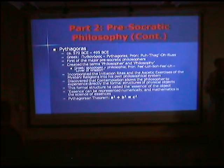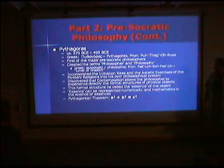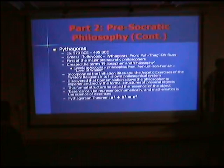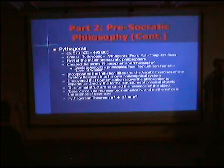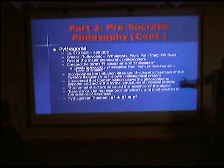Pythagoras discovered that contemplation, meditation, and asceticism allowed the philosopher to experience directly the formal structures of physical objects in the material world. This formal structure he called the essence of the object, and he suggested that the essence can be represented numerically — every object had a numerical essence. Mathematics is the science of essences. Of course, he is most famous for the Pythagorean theorem: A squared plus B squared equals C squared. Pythagoras actually discovered a proof of this theorem, showing that mathematics was not only practical but also mystical.